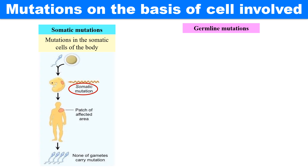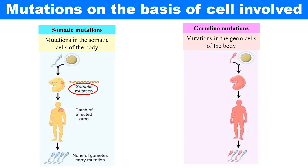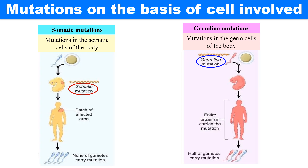So simply, somatic mutations are those mutations which are developed in the somatic cells, while germline or germinal mutations are those which occur in the germ cells of the body. The human body has two germ cells: sperm and ovum or egg. Any mutation which takes place in these two germ cells is known as a germline mutation. The effect of this mutation will definitely be shown in the individual or organism that carries it, but these mutations are heritable also — so half of the gametes will also carry these mutations.